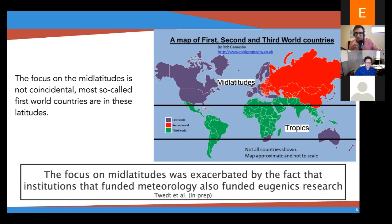I want to throw in a shout out to a new manuscript being prepared by Twett et al. — Judy Twett, Dargan Frierson, and myself. Another major inhibitor to tropical research has been that a lot of the funding agencies that funded mid-latitude research also funded eugenics research — people that actually wanted to just fund people in Europe and the United States. So if you're interested in the social, economic, and racial aspects of the history of atmospheric sciences, this manuscript by Twett et al. should be of interest. You can send me a message and whenever it gets accepted or submitted, we'll send you a copy.